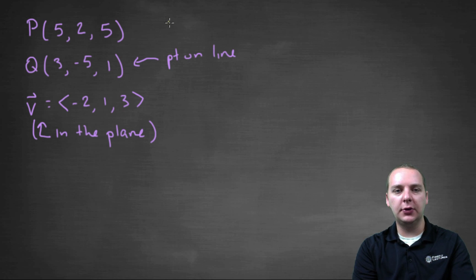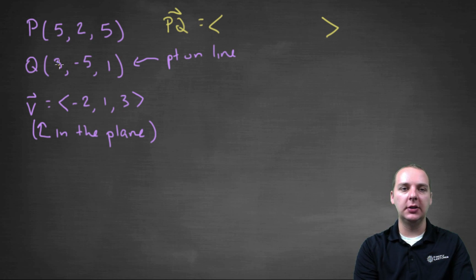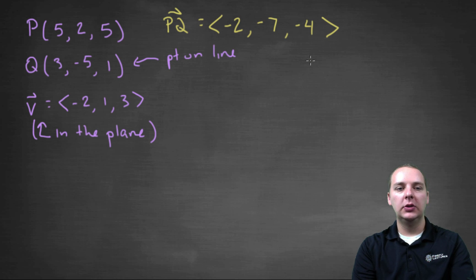So first up, let's create a vector, we'll call it PQ. To do this, we'll write it in component form, and to change a line segment into a vector in component form, you'll do terminal minus initial. So 3 minus 5 is -2 for the i component, -5 minus 2 is -7 for the j component, and 1 minus 5 is -4 for the k component. So this is a vector in the plane.